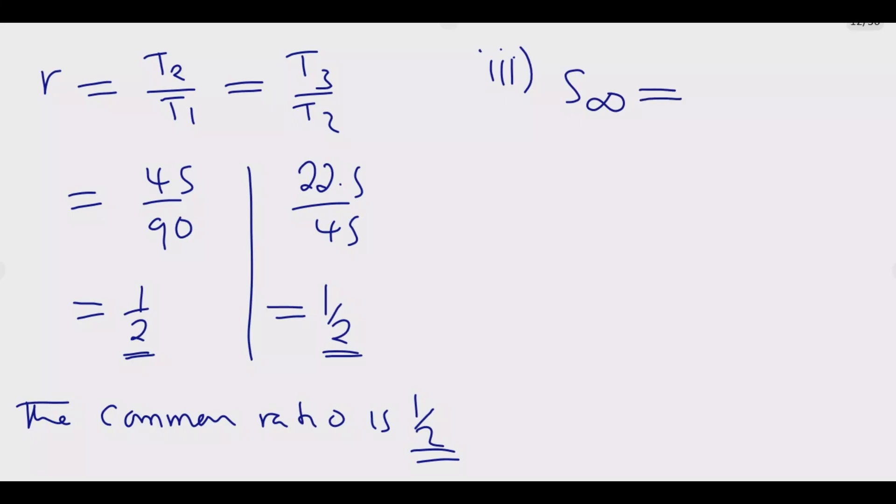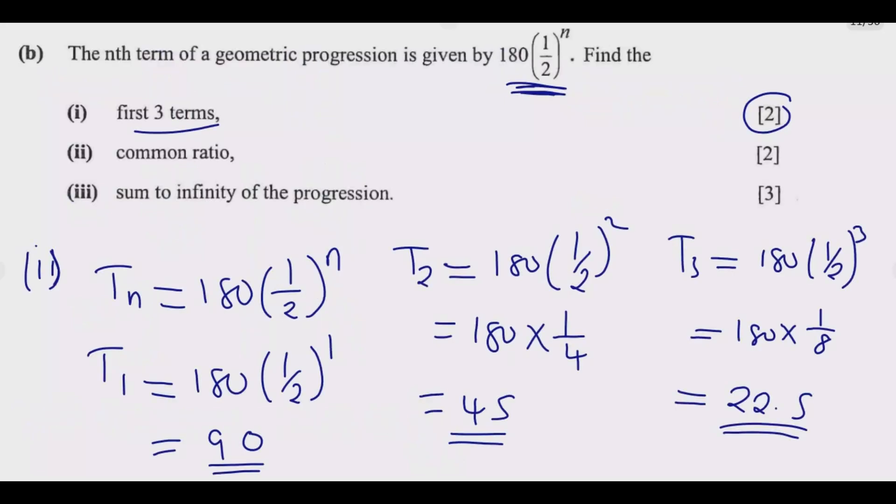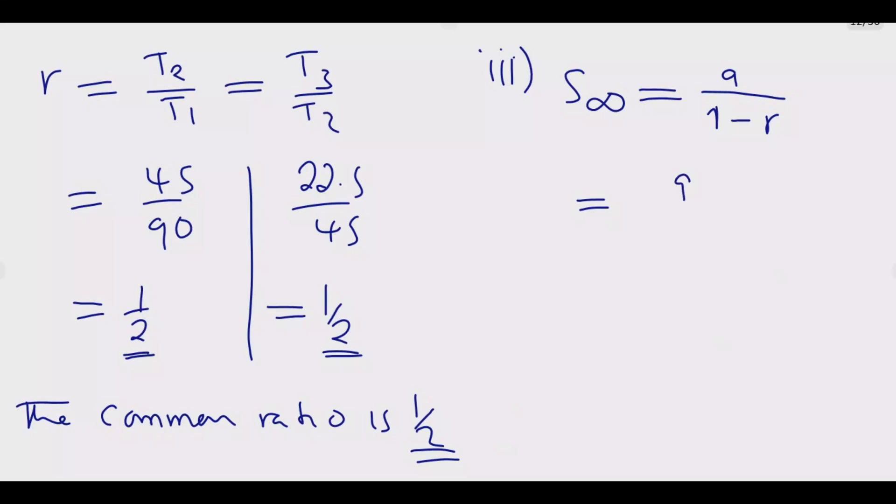So sum to infinity in that case is given by a over 1 minus r. So what is a? a is the first term. So the first term in this case is 90 which is a. So we are going to have 90 over 1 - 0.5. So at this point we are going to have 90 divided by 0.5 which is going to give me 180. So 180 is the sum to infinity.